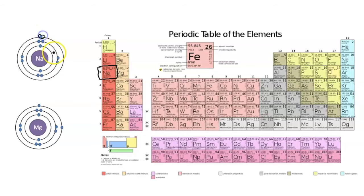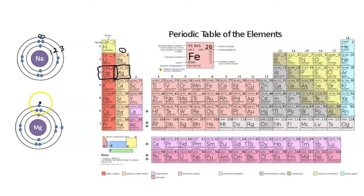We have the one valence electron here, and one, two, three energy levels. But look at magnesium. Magnesium is next to sodium, and it's in group two. So this means that magnesium will have two valence electrons in its outermost energy level. But because it's in period three, it still has one, two, three energy levels.